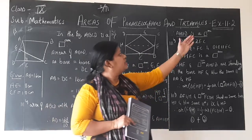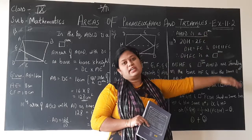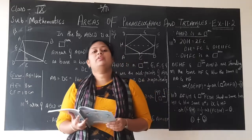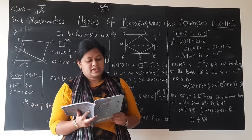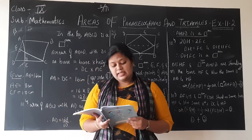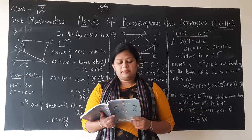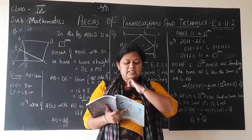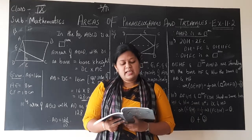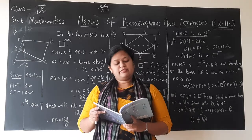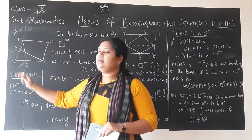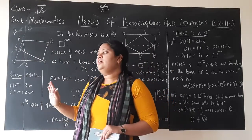Today we shall be starting with the second exercise of this lesson, that is Exercise 11.2, which will be covered for your upcoming FA3. The first question is: in the figure, ABCD is a parallelogram, AE is perpendicular to CD, and CF is perpendicular to AD. If AB is equal to 16 cm, AE is 8 cm, and CF is 10 cm, find AD.